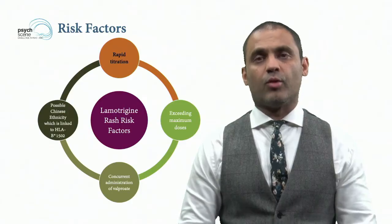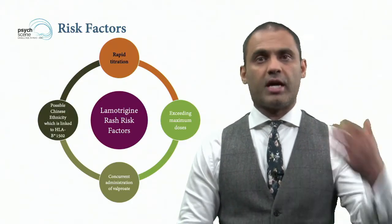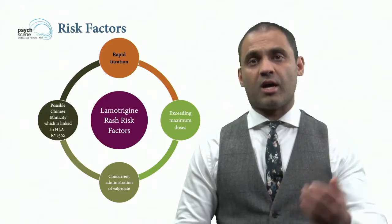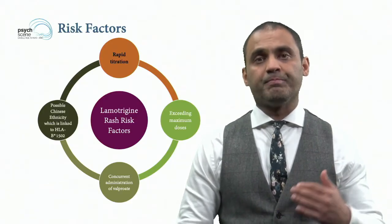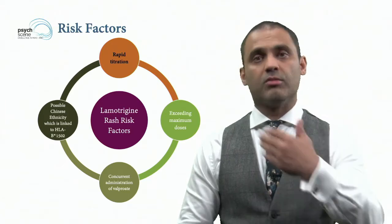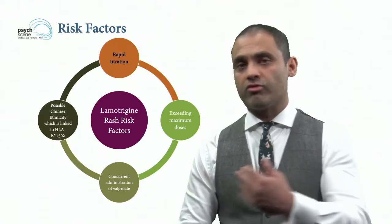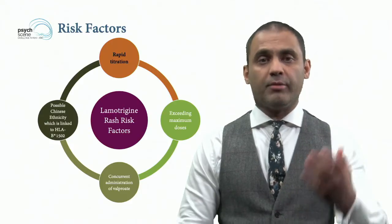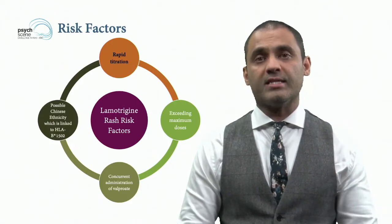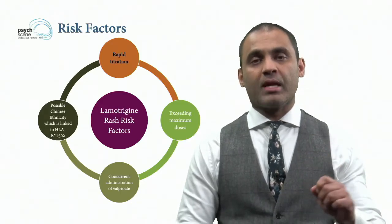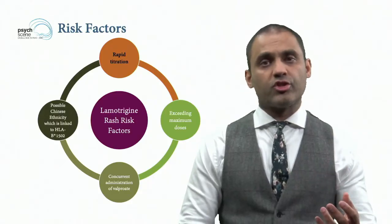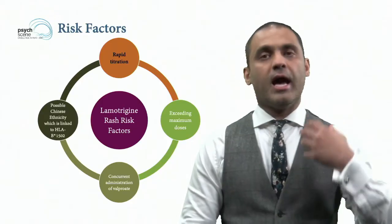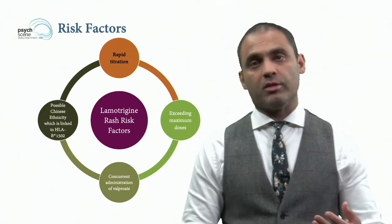What are the risk factors for Lamotrigine-induced rash? Firstly, rapid titration. Personally, I tend to be extra cautious — I start at 25 milligrams and increase by 25 milligrams every two weeks. Generally after 50 you can go to 100, but I tend to go to 75 and then 100, sometimes even slower. One risk factor is possible Chinese ethnicity, linked to the HLA-B1502 gene, which is associated with higher rates of Lamotrigine-induced bullous lesions, Stevens-Johnson syndrome, and toxic epidermal necrolysis.